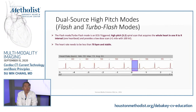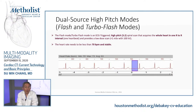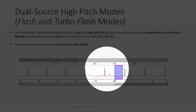The flash mode and turbo-flash mode differ in speed. The pitch with flash/turbo-flash mode is about 3.2, so you can acquire the whole heart within the R-R interval — essentially the entire data set in one single heartbeat and only during a certain part of the R-R interval, placed either in diastole or systole.